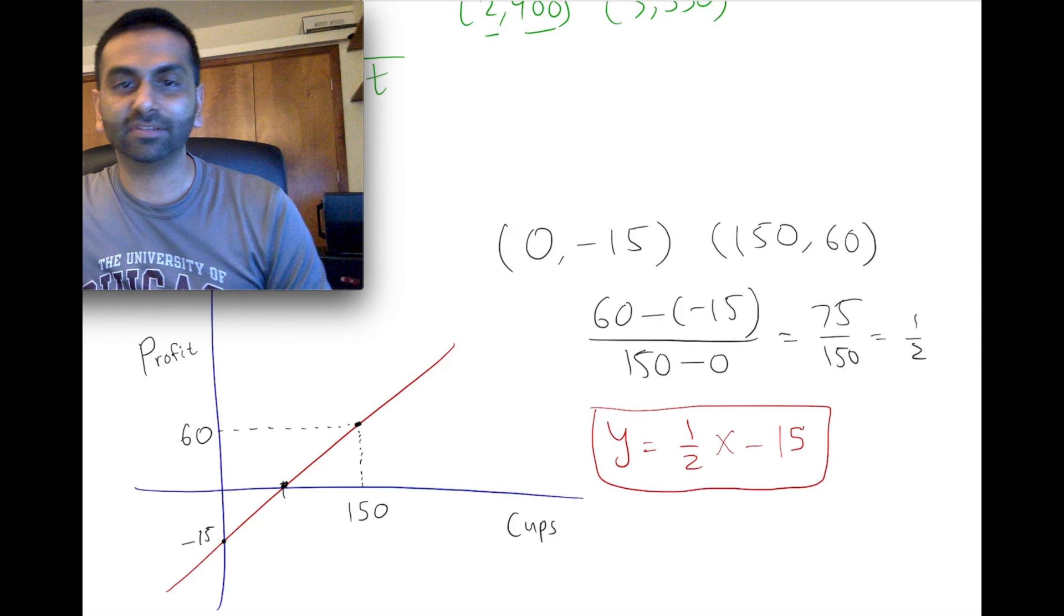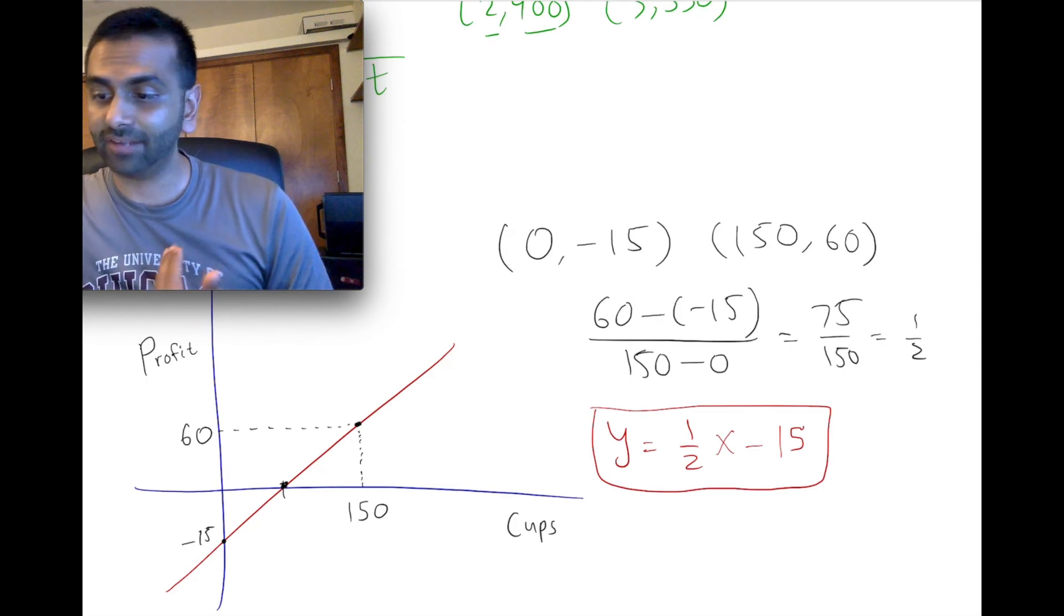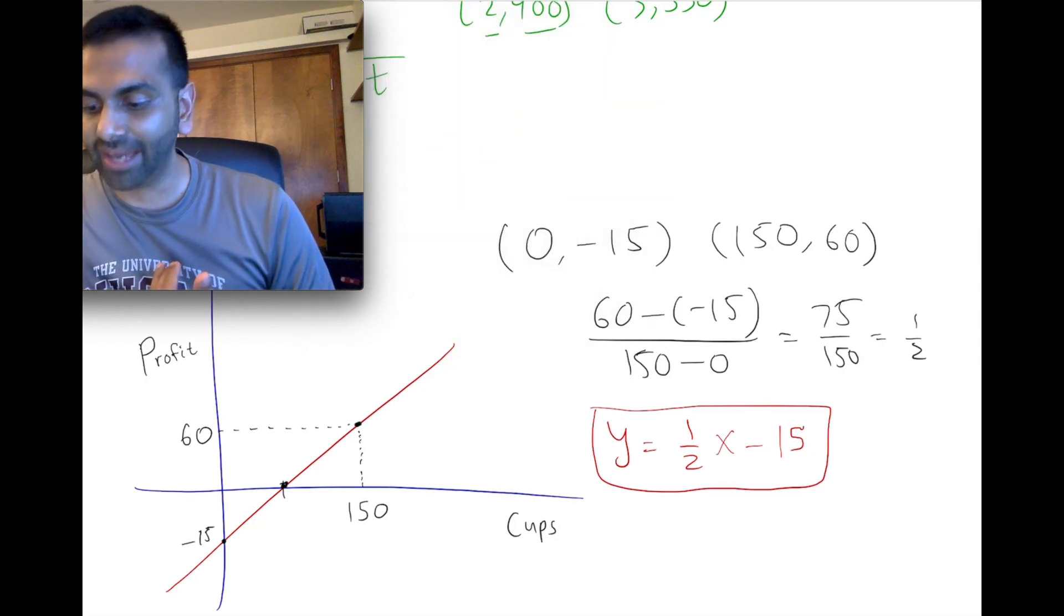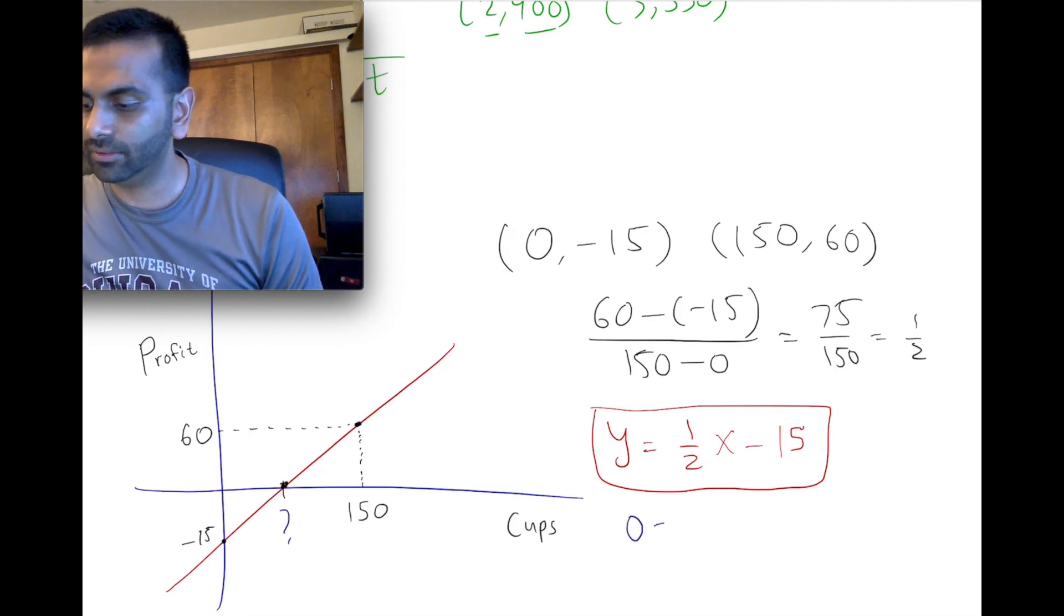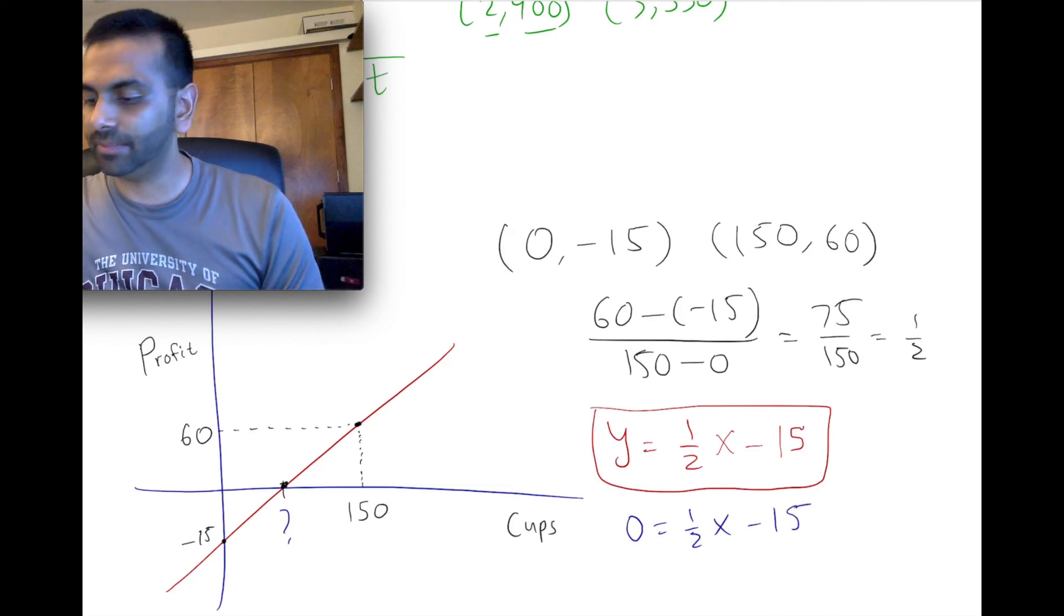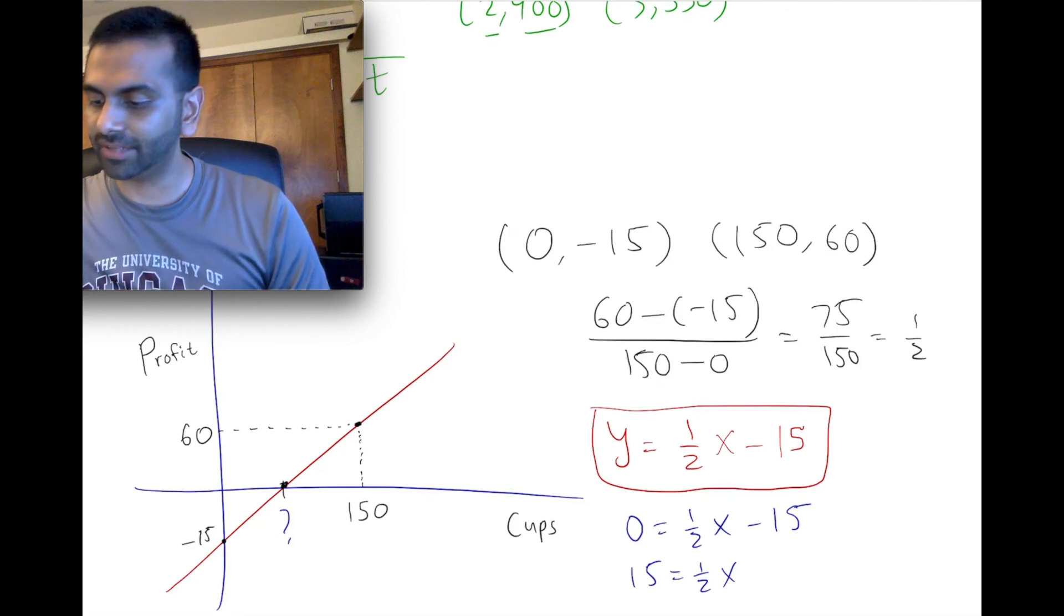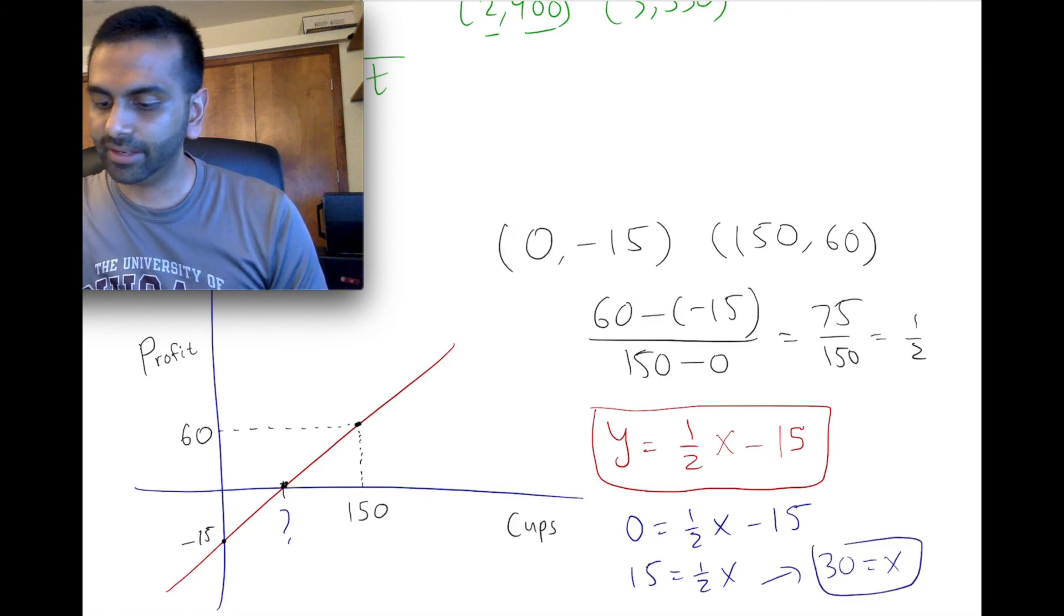These are cups of lemonade. And now we can answer the question. How many cups do we got to sell, meaning what is X when Y is zero? So when Y is zero, one-half X minus 15, we could solve for this. Add 15 to both sides. Multiply two to both sides, and you get 30 equals X. So there you go. So that means here that X should have been 30 when Y is zero.